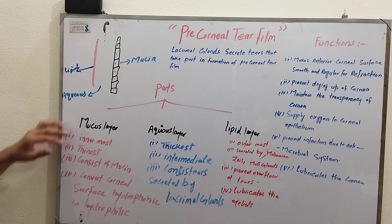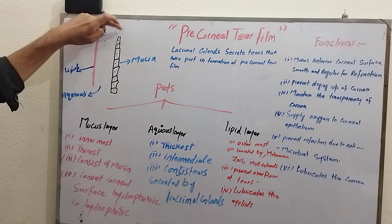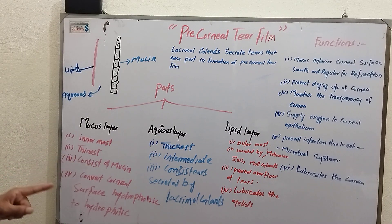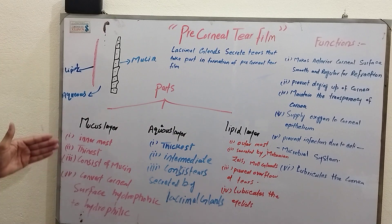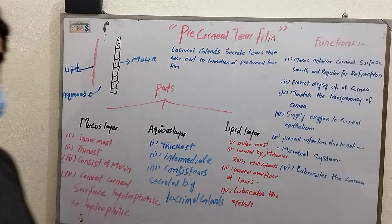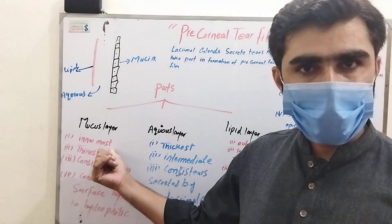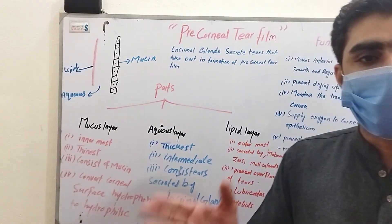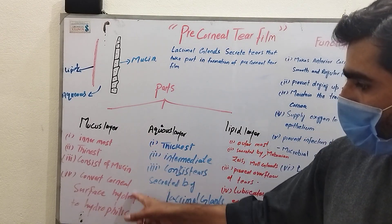The mucous layer is the innermost layer. It is the thinnest layer — remember this is the thinnest layer. It consists of mucin. It converts the corneal surface from a hydrophobic surface to a hydrophilic surface.